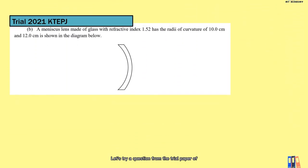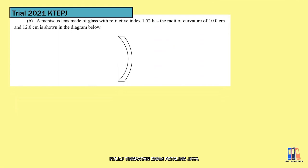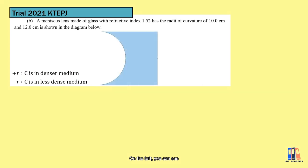Let's try a question from the trial paper of College Tunku Abdul Rahman, Petaling Jaya. We have a meniscus but we are not sure if it is either converging or diverging. It is made of glass with n equal to 1.52 and a radius of 10cm and 12cm as shown in the diagram. We are going to identify the sign of each radius. On the left, you can see it is a concave surface. The center of curvature is in less dense medium, so the radius is negative 10cm.